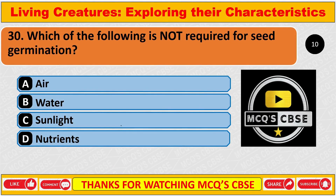Which of the following is not required for seed germination? The correct answer is C: Sunlight.